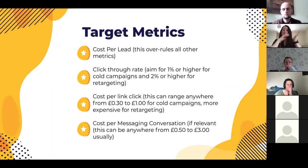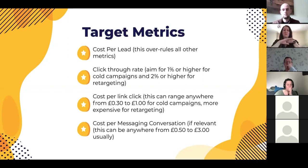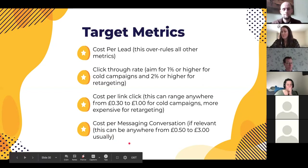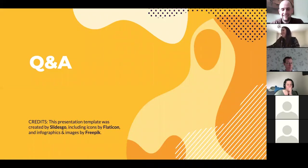The target metrics: above all else it's cost per lead — that's your primary target metric. If you're consistently paying too much per lead, check your click-through rate — it should be 1% or higher for cold campaigns, or 2% or higher for retargeting. A low CTR means you're not engaging enough or your audience isn't right. Then look at cost per click — this can range from 30p to a pound for cold campaigns. For Messenger campaigns, cost per messaging conversation is usually between 50p to £3, depending on your industry.